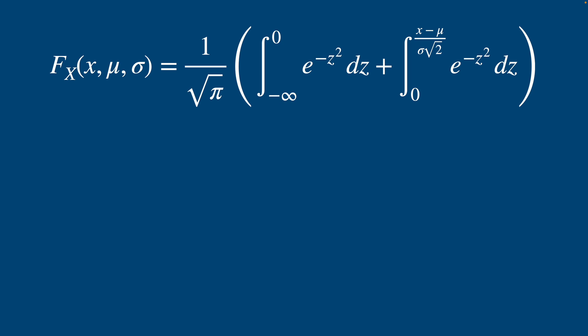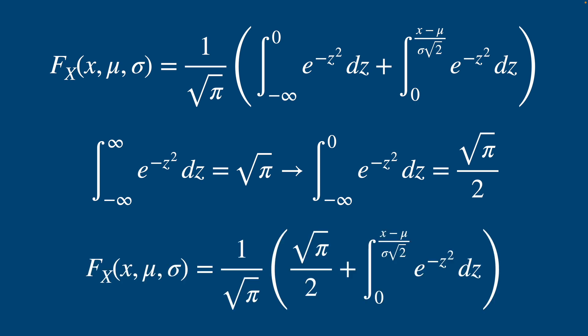We can use the fact that this left part within our brackets is just half of our Gaussian integral which evaluates to √π. Since e^(-z²) is an even function, we have √π/2 for our integral. We can plug that back in and you should notice we're really close to our original error function.